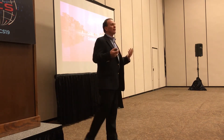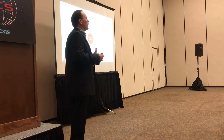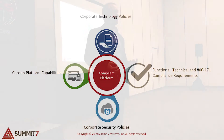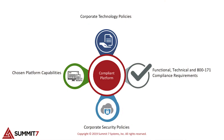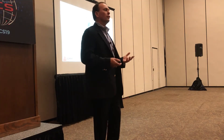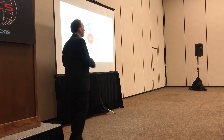When putting security and compliance in place, there are four things you really have to take into consideration. The first is having the right corporate technology policies. If you don't have the right policies in place, it doesn't matter what you do from a platform standpoint — you're not going to be in a compliant environment. You have to have policies that drive both technology and security behavior: Can you bring your own device to work? Can you take your laptop home? Can you connect from a public Wi-Fi? All of those kinds of policies are very important.